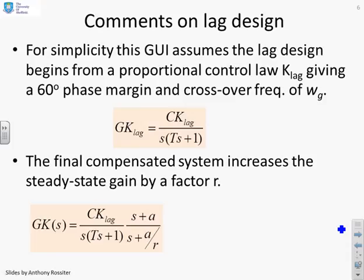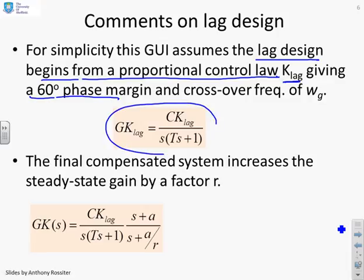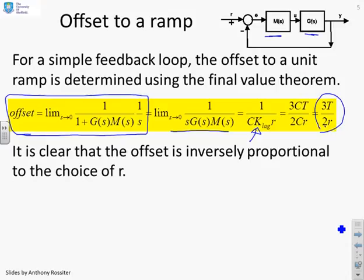For simplicity, this GUI assumes the lag design begins from a proportional control law k_lag giving a 60 degree phase margin. So if you basically take this system here and say I want a 60 degree phase margin, and then you find the corresponding k_lag, then what you will find is that's where this formula here has come from.